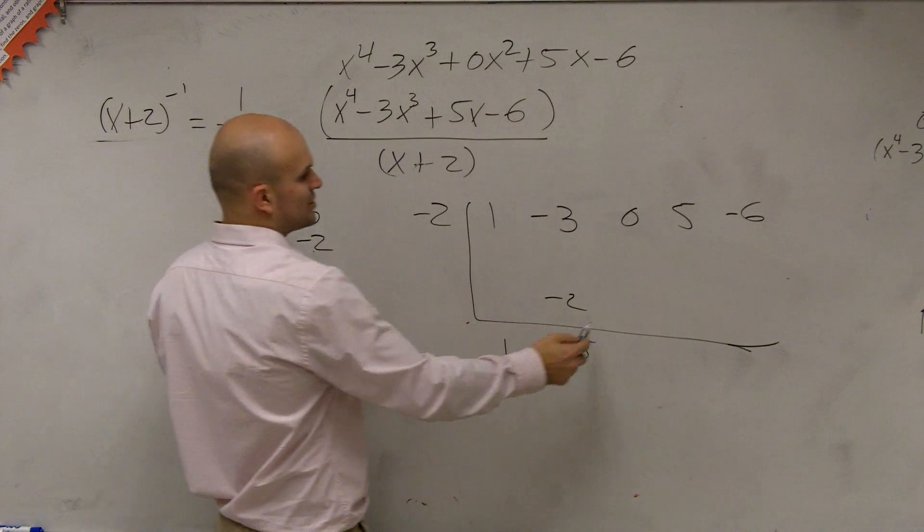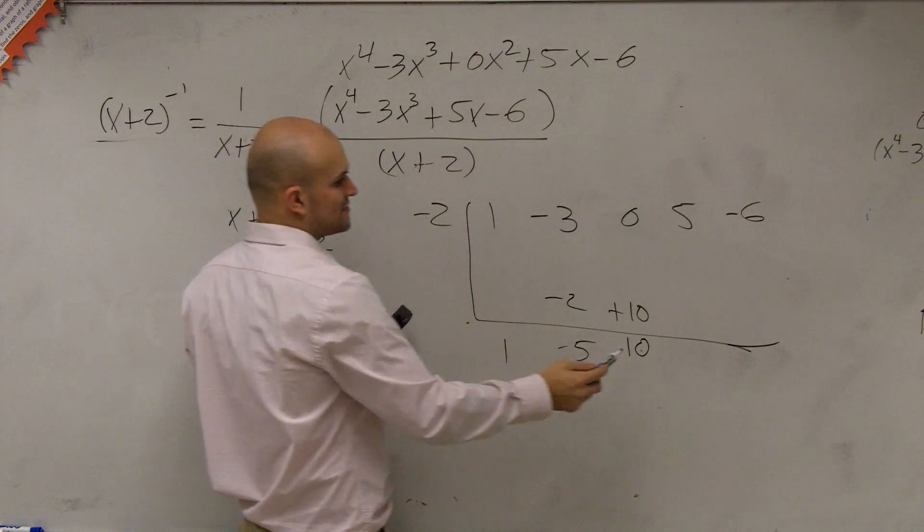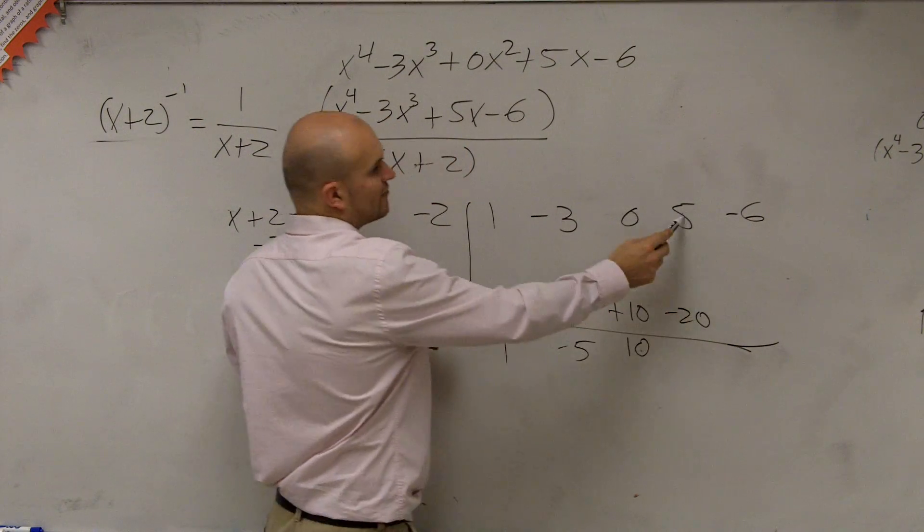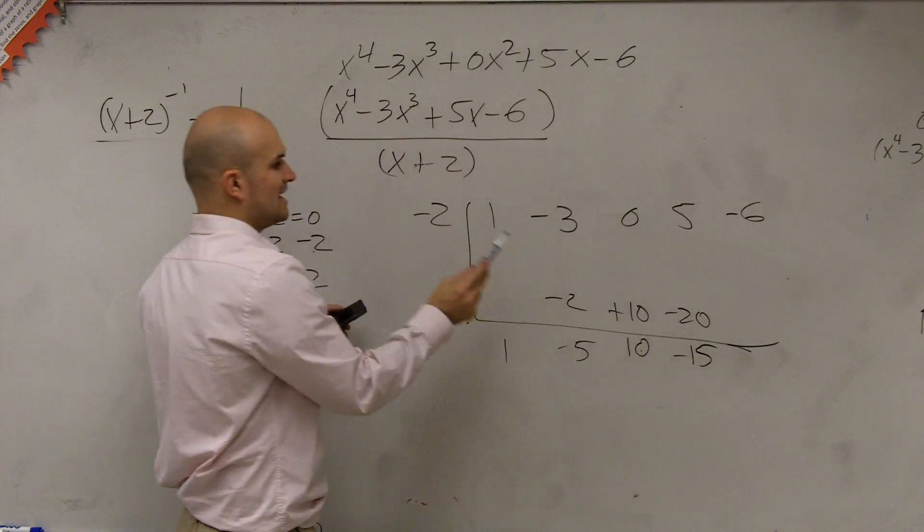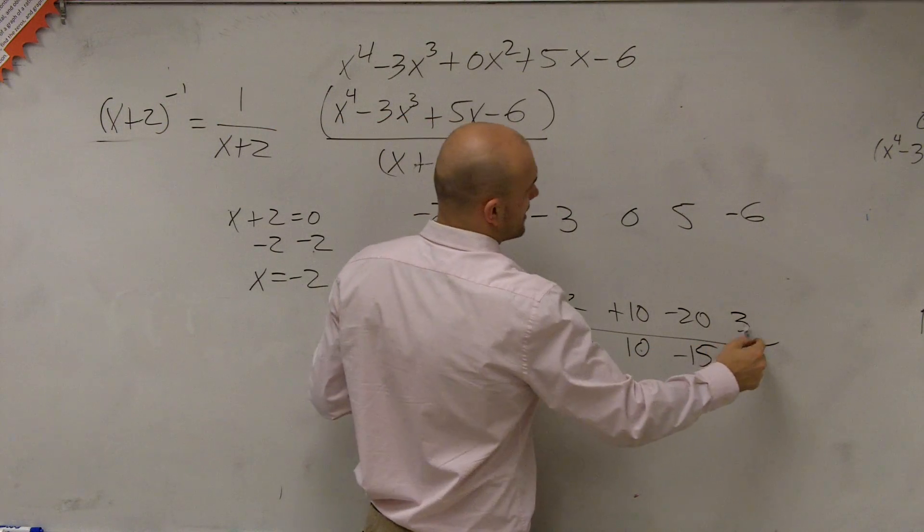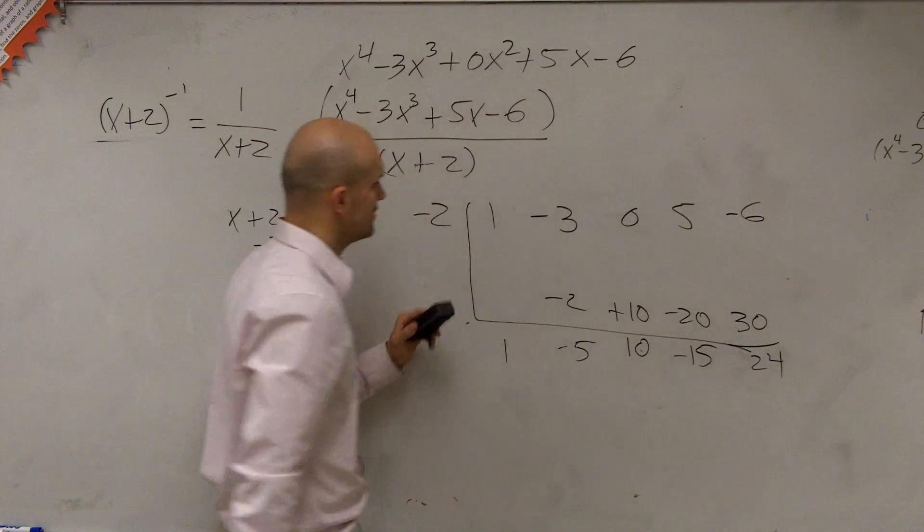Negative 5 times 2 is positive 10. 0 plus 10 is 10. 10 times negative 2 is negative 20. 5 plus negative 20 is negative 15. Negative 15 times negative 2 is positive 30, leaving you a remainder of positive 24.